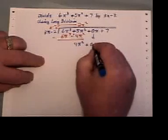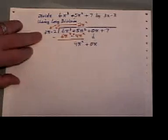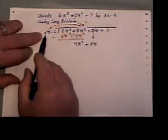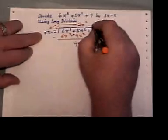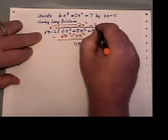Bring down the next term, even if it's a 0 term. And repeat. What do I have to multiply 3x by to get 9x squared? That would be plus 3x.